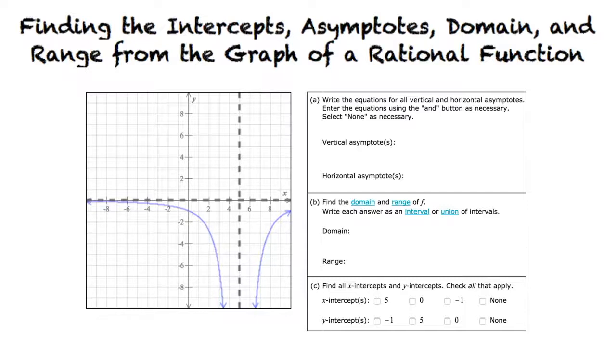Let's start by looking at part A. Part A is asking us to write the equation for the vertical and horizontal asymptotes. Recall an asymptote is a line that a curve approaches as it heads towards infinity.